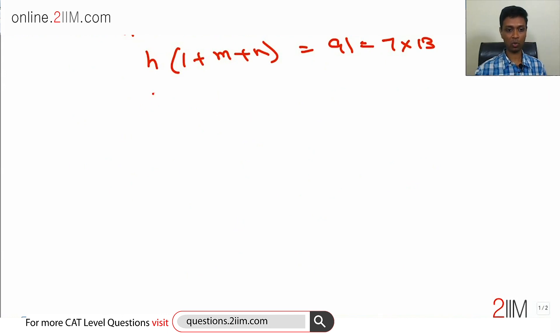91 can be 1 into 91, 7 into 13, 13 into 7, 91 into 1. HCF is not 1, so this is ruled out. HCF being 91 and m plus n being 0, this is also ruled out. So we have two possibilities.